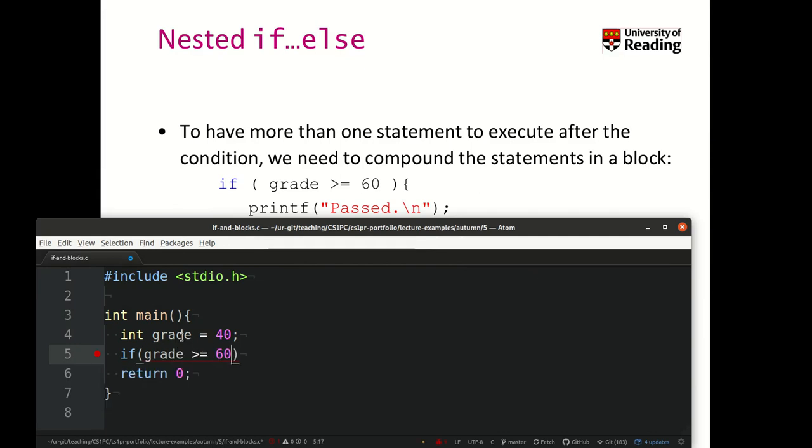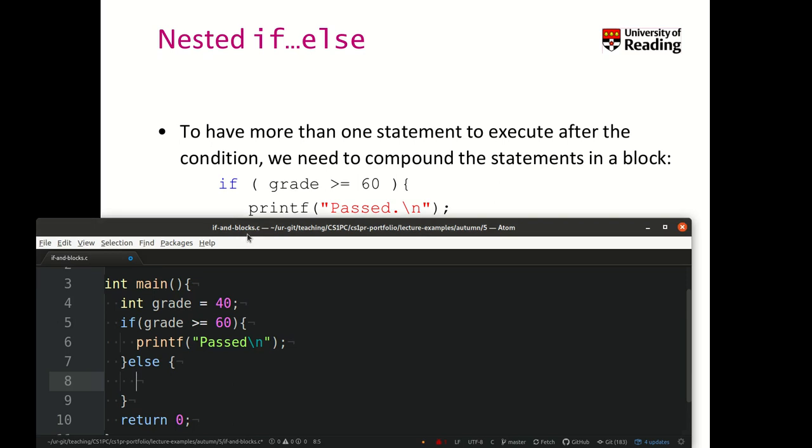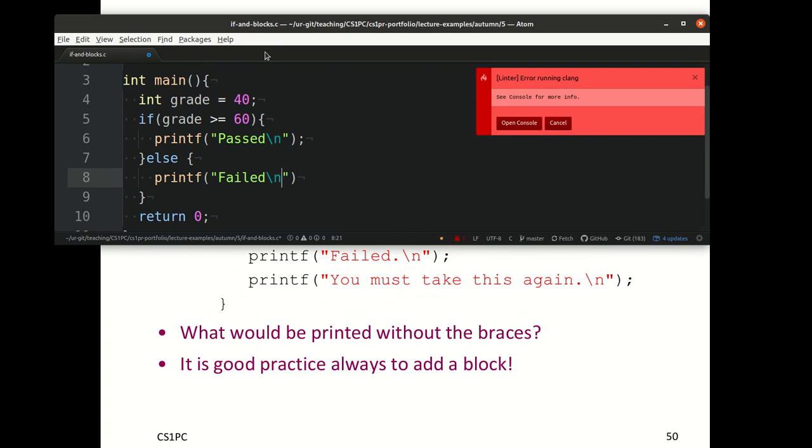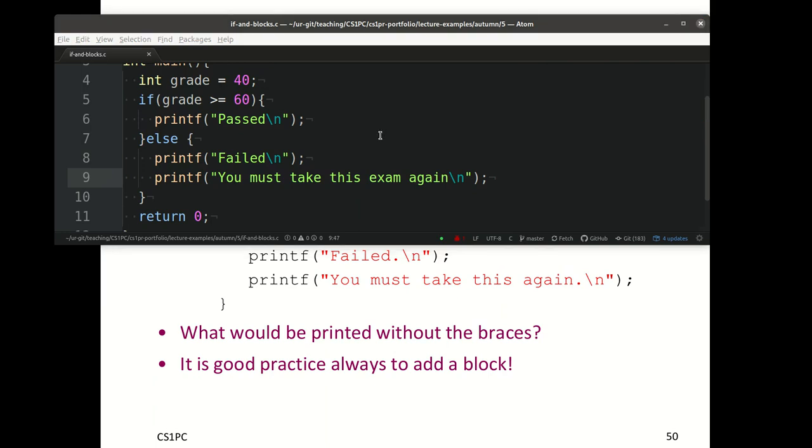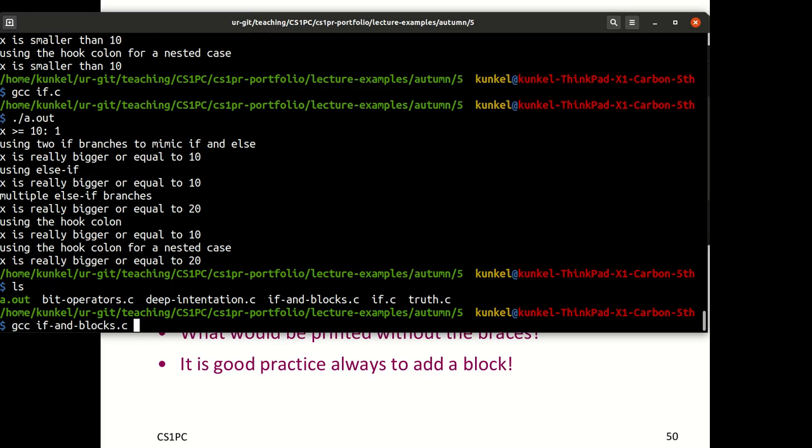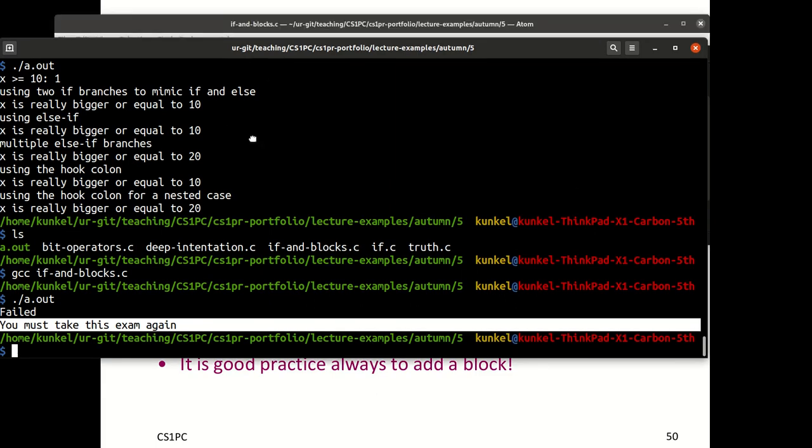If grade is bigger or equal to 60, we want to printf passed. Else, printf failed. And we want to also execute the second printf, you must take this exam again. Let's compile this example and execute it. As the value was 40, we got failed and you must take this exam again. That's what we can do.